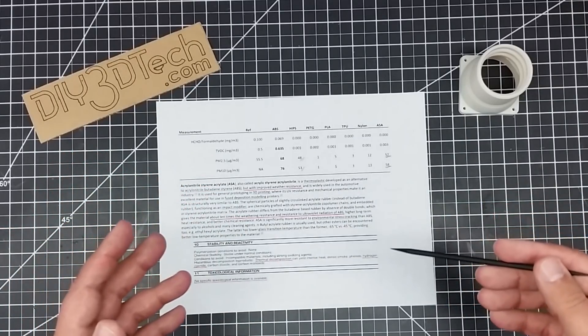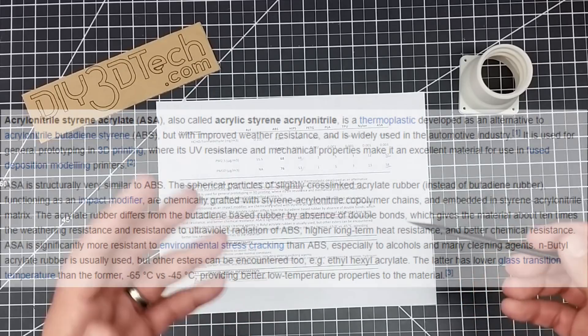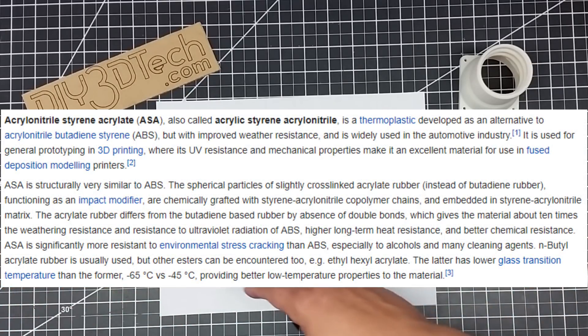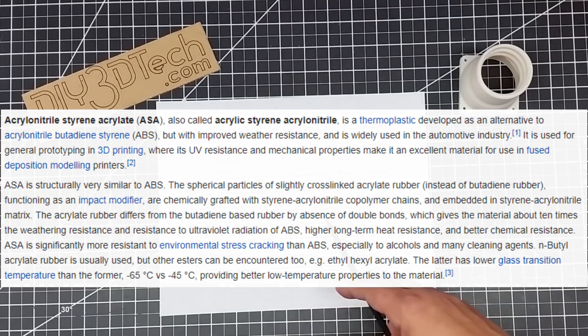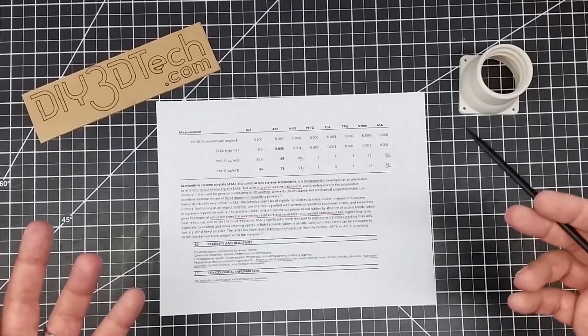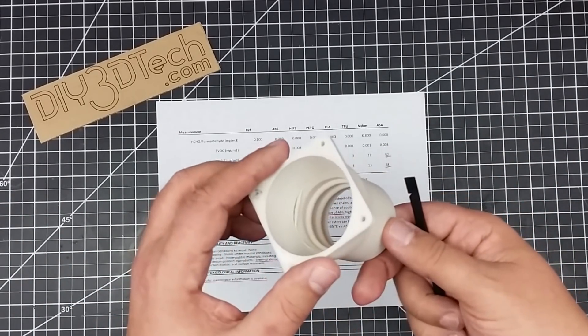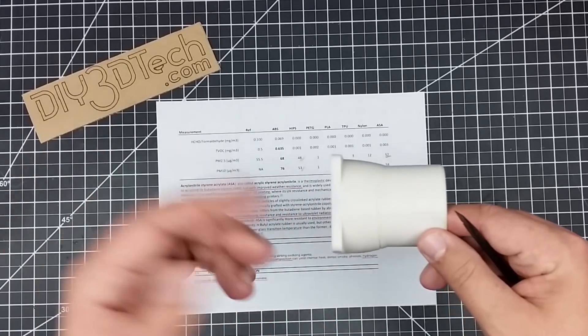So I pulled some information on it, and one of the things, you know, it's common knowledge ASA is very weather resistant, and again, meant to compete with ABS. And in this space, it says here, it's about 10 times the weathering resistance and resistance to ultraviolet radiation of ABS. So this stuff seems to be pretty interesting, and I definitely will experiment more with this, so look for it coming.